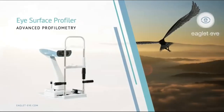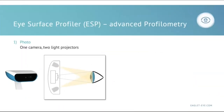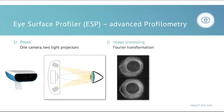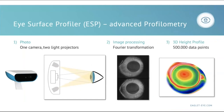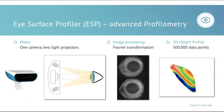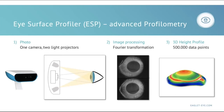This is all possible because of the ESP, the Eye Surface Profiler. The ESP is one camera with two light projectors onto the eye, and image processing is via Fourier transformation. This gives us a 3D height profile with half a million data points. I find this very useful in explaining to patients how sophisticated our lenses are and how challenging their eyes actually are, giving them reassurance that we can deliver a comfortable fit the first time.